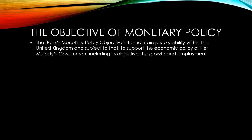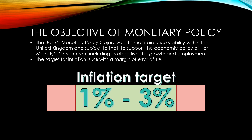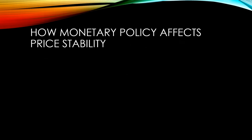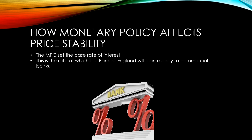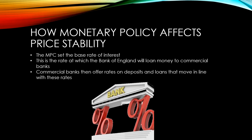The target for inflation is 2% with a margin of error of 1%, meaning the Bank of England is happy if inflation is between 1% and 3%. The Monetary Policy Committee make changes to the base rate of interest — this is the rate at which the Bank of England will loan money to commercial banks.